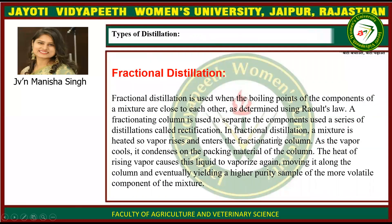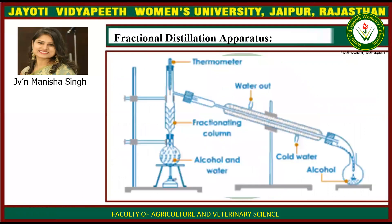Fractional distillation is used when the boiling points of the components of a mixture are close to each other, as determined using Raoult's Law. A fractionating column is used to separate the components through a series of distillations called rectification. In fractional distillation, a mixture is heated so vapor rises and enters the fractionating column. As the vapor cools, it condenses on the packing material of the column, and the heat of rising vapor causes the liquid to vaporize again, moving it along the column and eventually yielding a higher purity sample of the more volatile component. For example, alcohol and water are heated, alcoholic vapors form, are condensed in the condenser, and collected in the receiving flask.